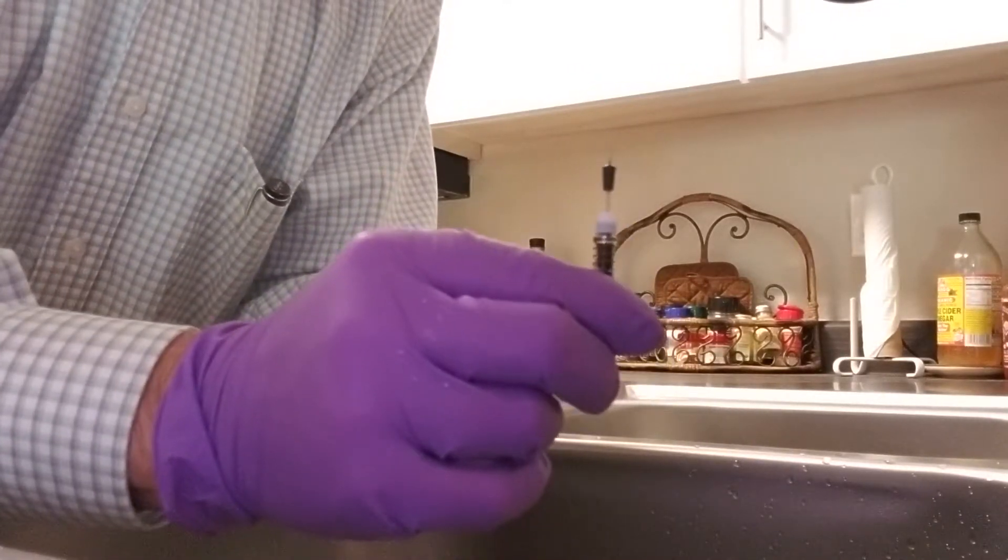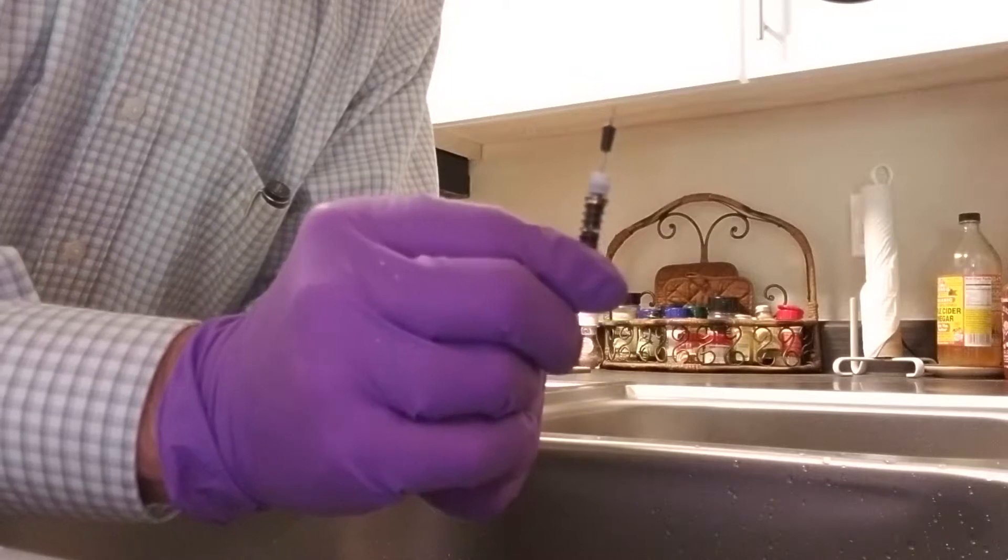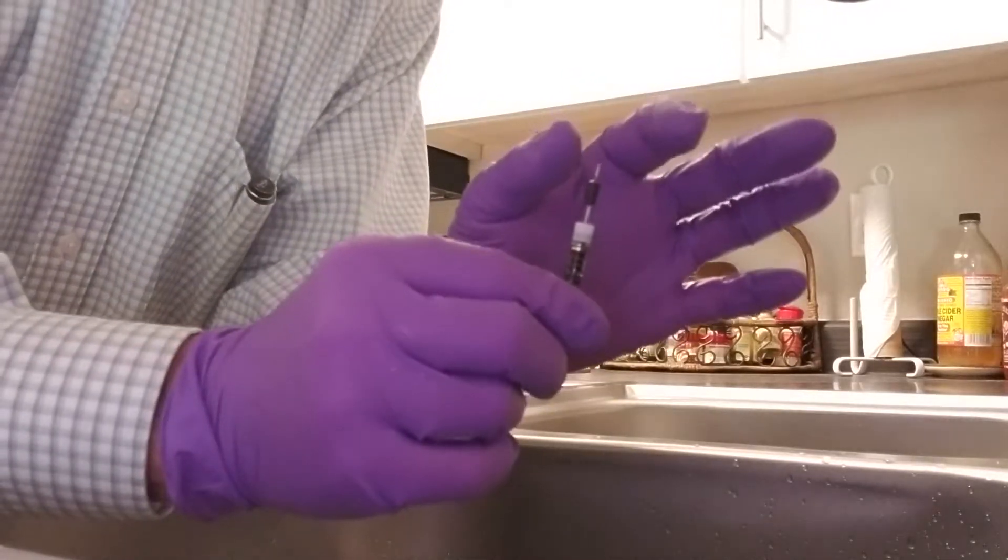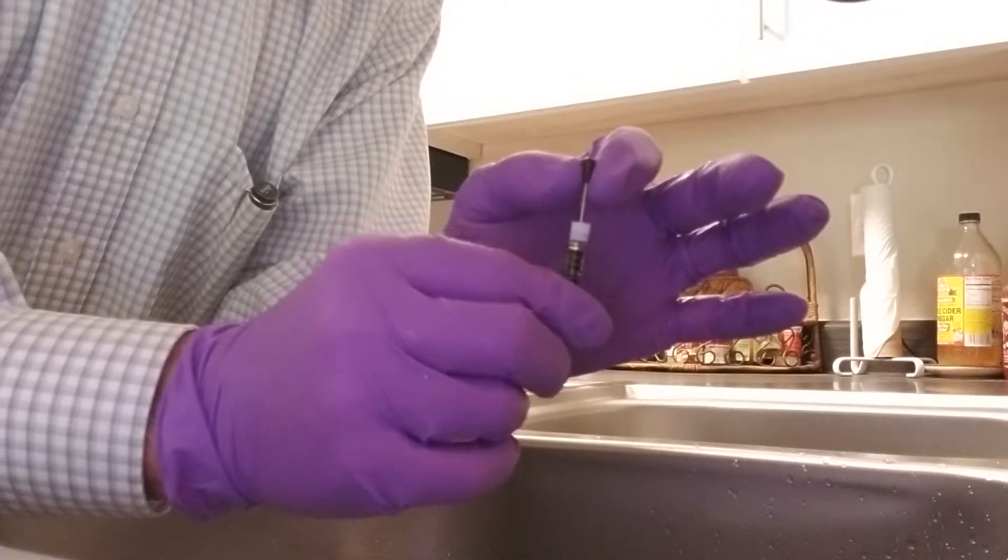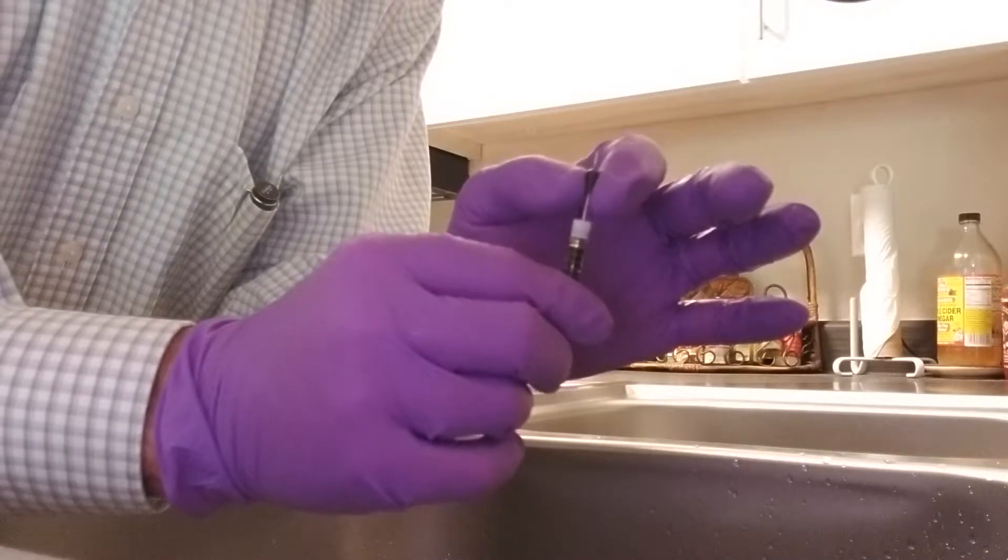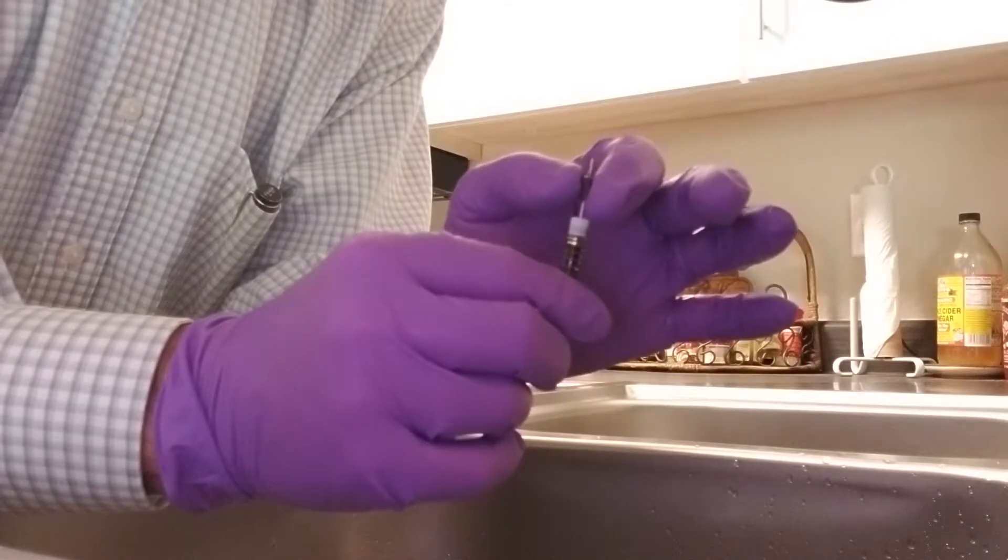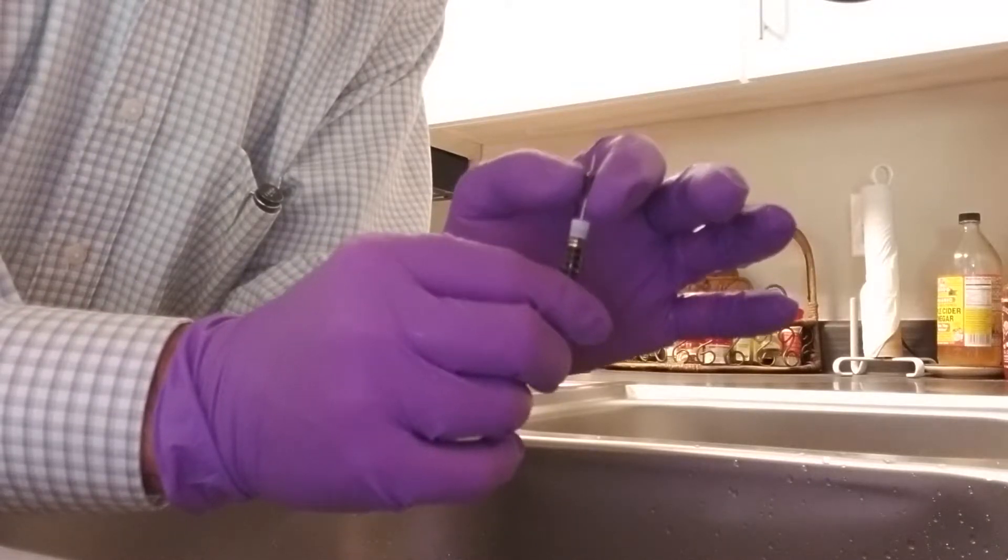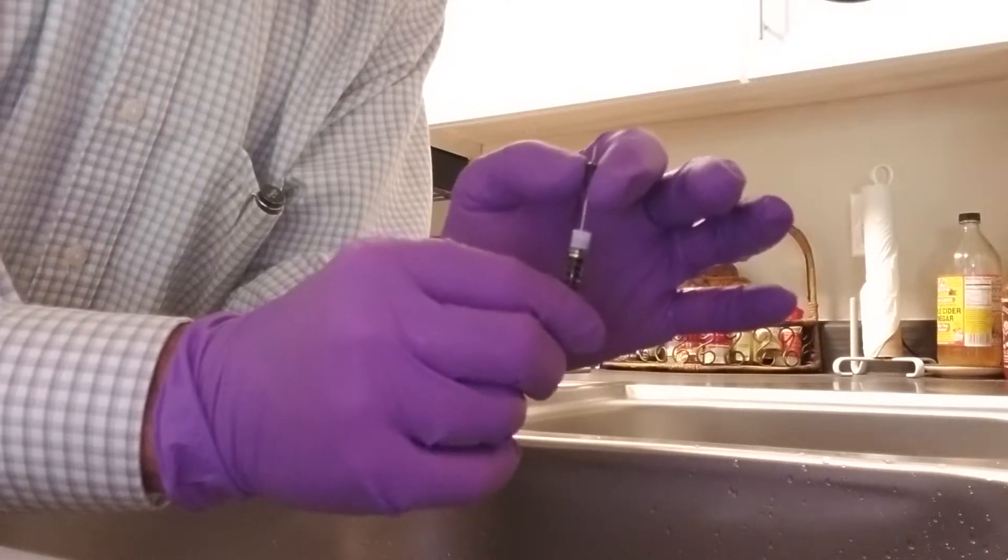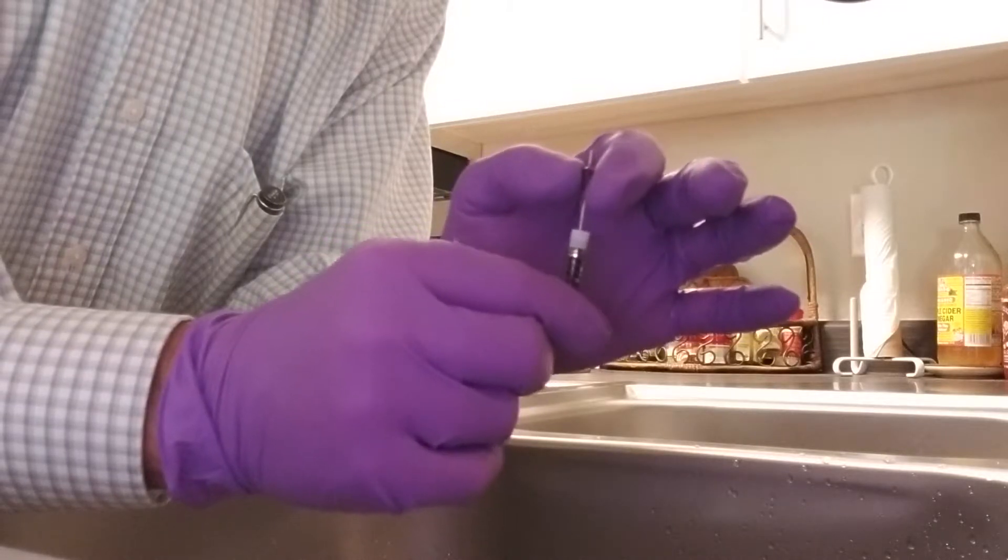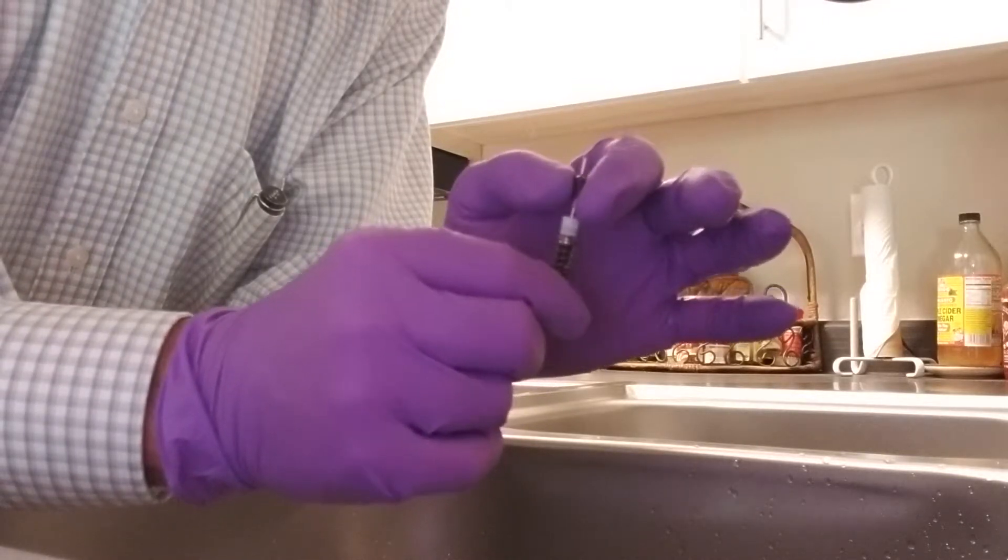Then I hold this under the water with the plunger up. Very carefully, I move the plunger up and down without putting pressure on either end. You don't want to push it in too hard or pull it out too hard. This helps get all of the ink that's trapped in there out.